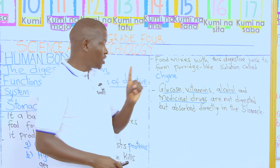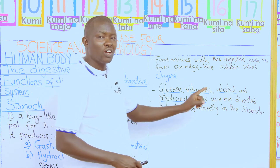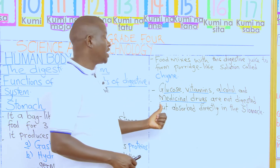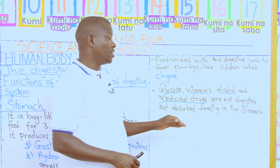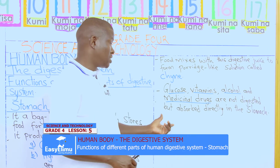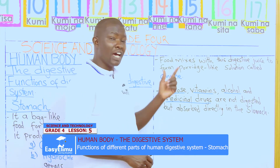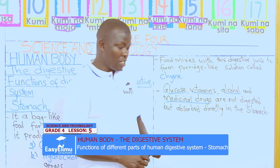But remember — glucose, vitamins, alcohol, and any medicinal drug that you have taken is not digested, but it is absorbed directly in the stomach to our bodies.